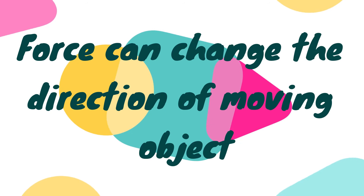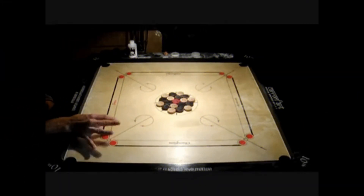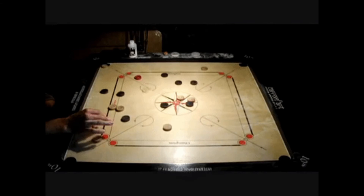The next application is: force can change the direction of a moving object. For example, in a cricket match, when a batsman hits a ball with a bat, the direction of the ball changes — the force exerted by the bat changes the direction of the moving ball. An asteroid also changes its direction after colliding with another asteroid. In the game of carrom, when we take a rebound, the direction of the striker changes because the edge of the board exerts a force on it.